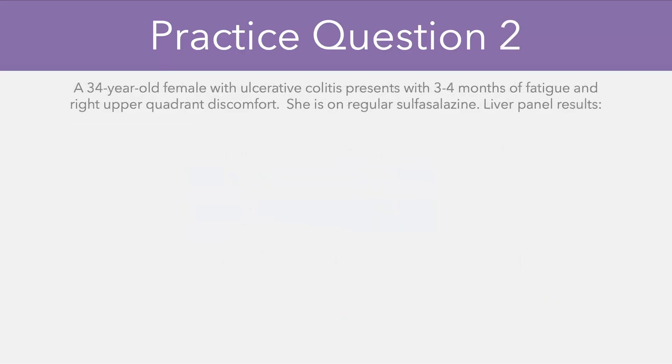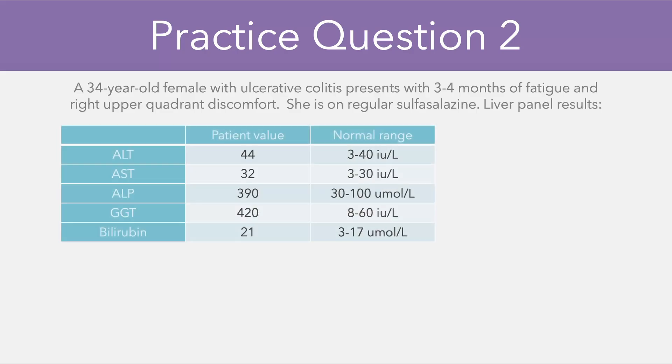Moving on to the second question, we have a 34-year-old female with a background of ulcerative colitis, who presents with a four-month history of fatigue and right upper quadrant discomfort. She's on regular sulfasalazine for the ulcerative colitis, and we have our liver function panel here.